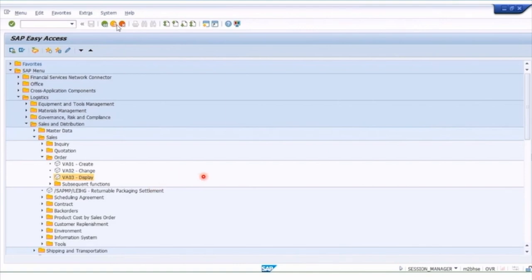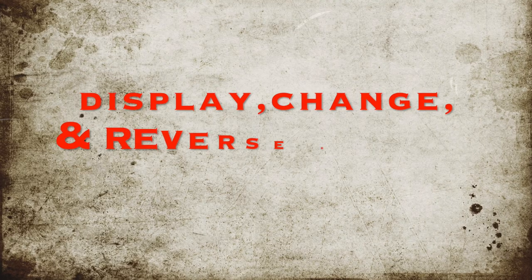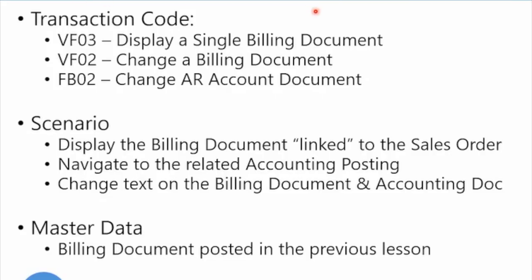Now that we've learned how to create an invoice, we're going to cover how to display and potentially change an invoice — what can be changed — and also how to change the related accounting document if necessary. The scenario is: display a billing document linked to a sales order, navigate to the accounting posting, and change some text on the billing and accounting document. We'll use the billing document posted in the previous lesson. Remember SAP won't let you change any billing logistics information or accounting details, because you need to always preserve the related trail.